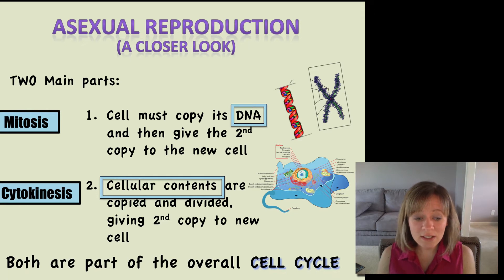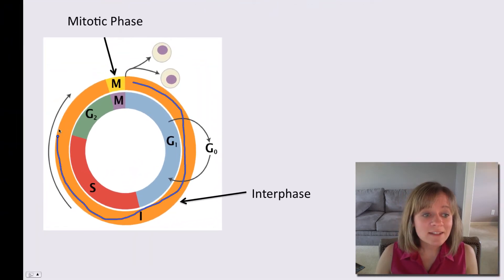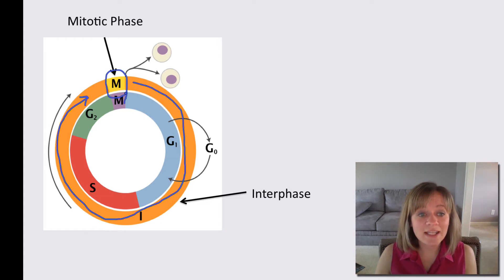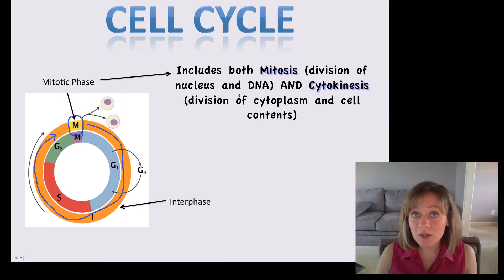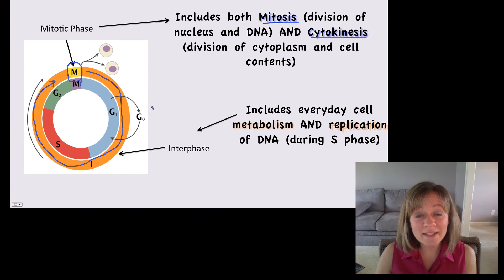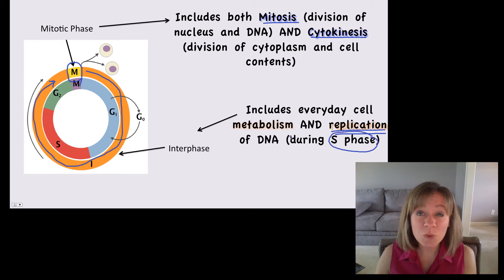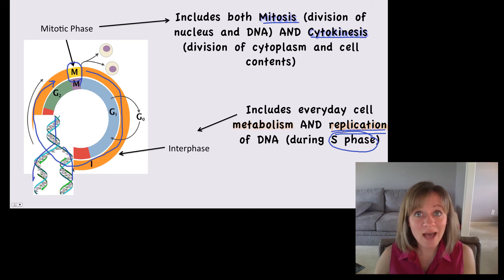Both mitosis and cytokinesis are part of the overall cell cycle, which has some other parts to it as well. In the cell cycle diagram, the orange region labeled I is called interphase. Most of the time, the majority of the time, your cell is in interphase. Only a small amount of the time is your cell in the M phase, the mitotic phase, which includes both mitosis — dividing the DNA and nucleus — and cytokinesis, dividing the cytoplasm and cell contents. During interphase, the cell goes about everyday metabolism, and importantly, this is where the DNA gets replicated — specifically during S phase, where one molecule of DNA is duplicated into two.